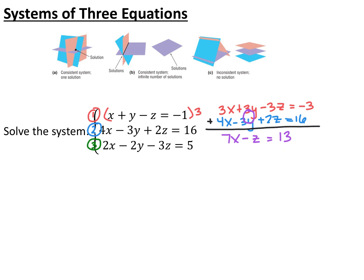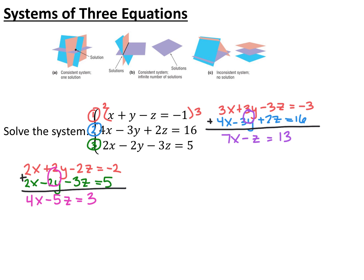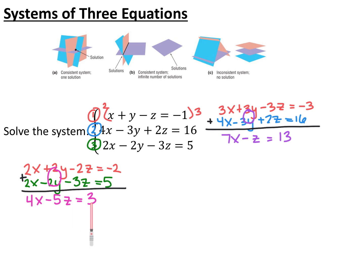I'll first look at equations one and two and eliminate y. I multiplied the first equation by 3 and got 3x plus 3y minus 3z equals negative 3, then added it to the original second equation. The y is eliminated and I'm left with 7x minus z equals 13. Now I look at equations one and three to eliminate y as well, multiplying the top equation by 2 to get 2x plus 2y minus 2z equals negative 2.